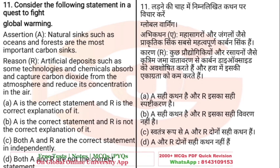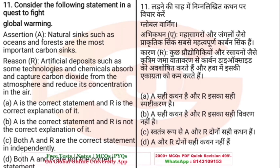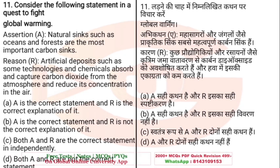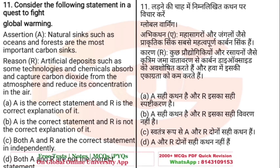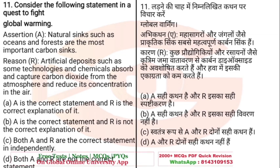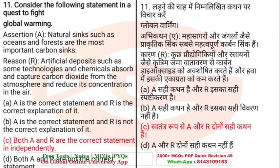This is an assertion-reason question. Assertion: Natural sinks such as oceans and forests are the most important carbon sinks. Reason: Artificial deposits such as some technologies and chemicals absorb and capture carbon dioxide from the atmosphere and reduce its concentration in the air. Both statements are correct, but the reason is not the correct explanation of the assertion. Therefore, the right answer is: Both A and R are correct statements independently.